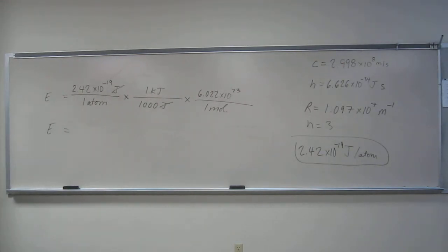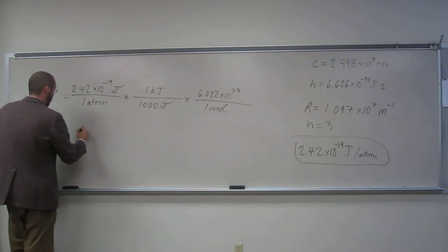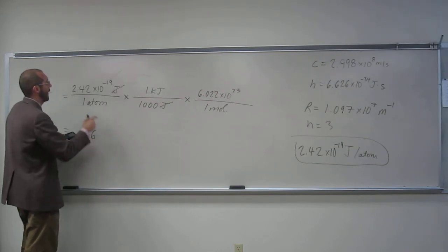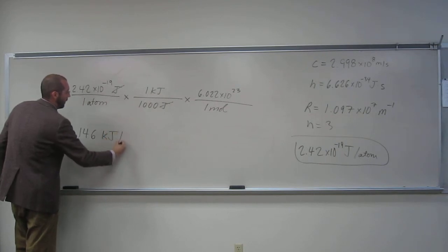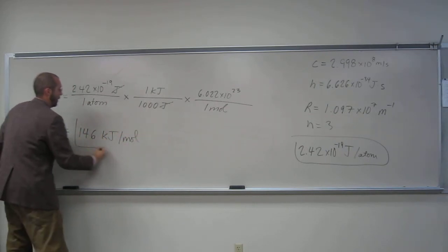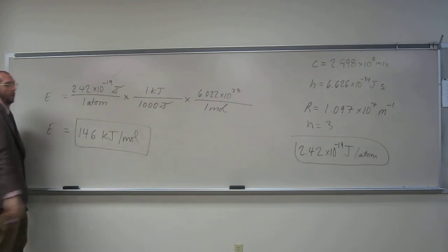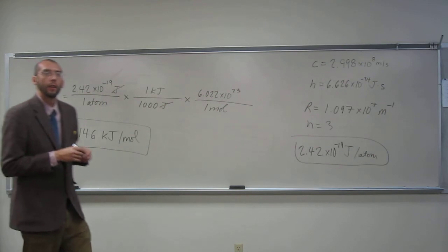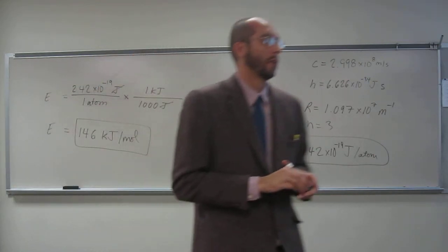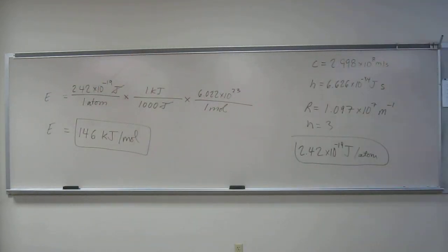So take that, divide it by a thousand, and then multiply it by Avogadro's number. Any questions on doing something like this?